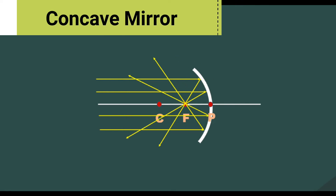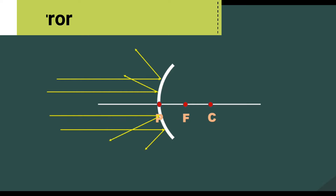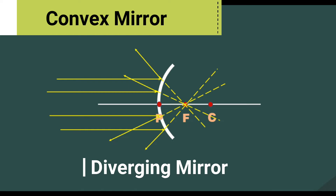Light rays parallel to the principal axis that strike the surface of the concave mirror come together toward a common point called the principal focus. Since they converge on being reflected, the concave mirror is described as a converging mirror. In the case of the convex mirror, rays parallel to the principal axis after reflection appear to come from a point F situated behind the mirror — rays of light appear to diverge from F. This point is called the principal focus of the convex mirror. Convex mirrors are also called diverging mirrors. The principal focus of a convex mirror is a virtual focus because the reflected rays do not actually pass through it, but appear to do so.